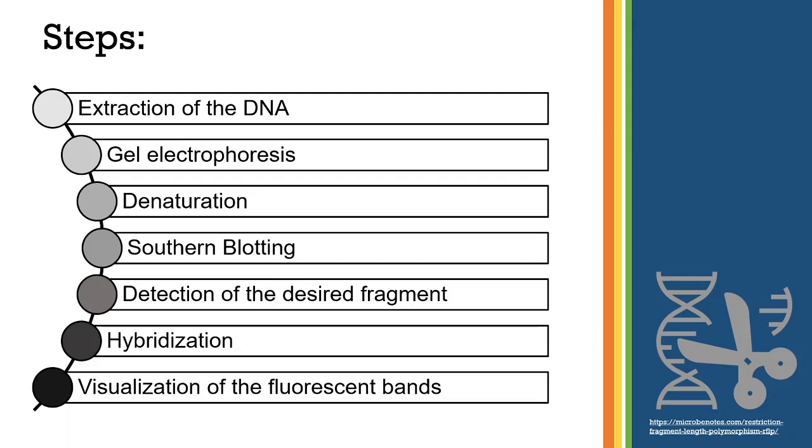First of all, we need to extract the DNA from the desired organism and expose them to restriction endonucleases. Now, run the digested DNA on gel electrophoresis. After this, we denature the separated bands using NaOH so they are now single-stranded.